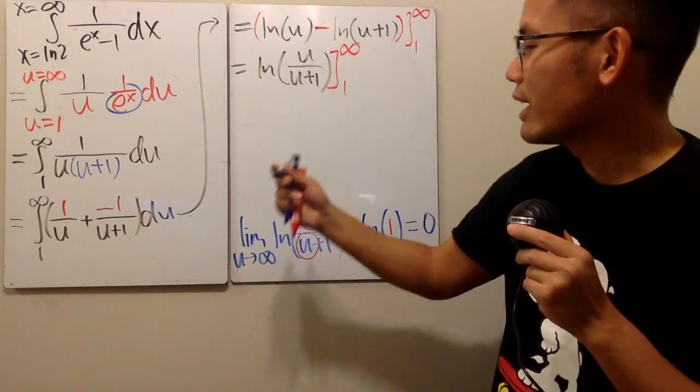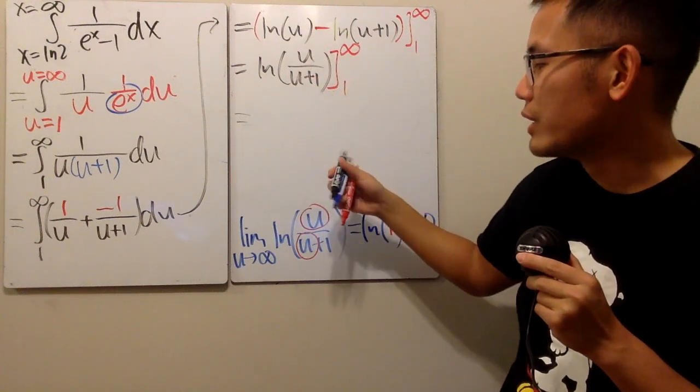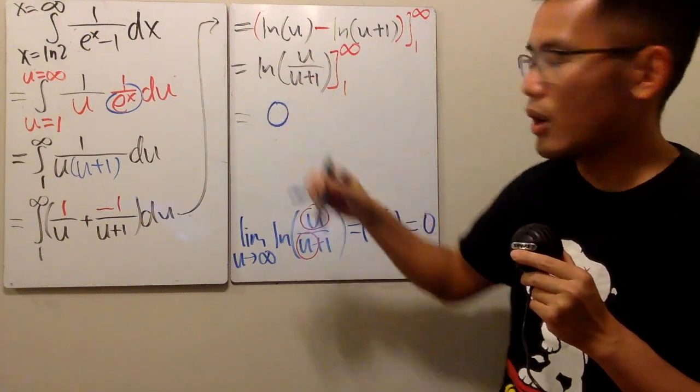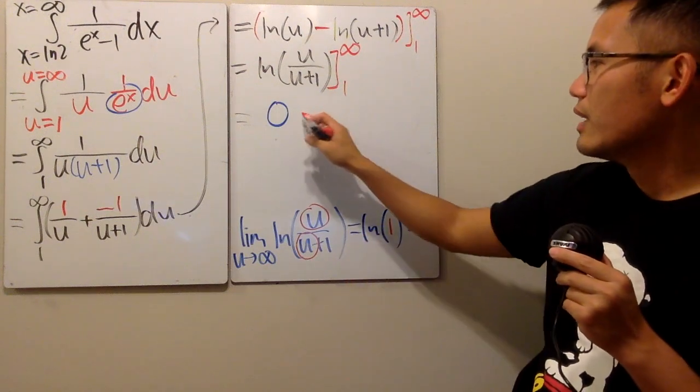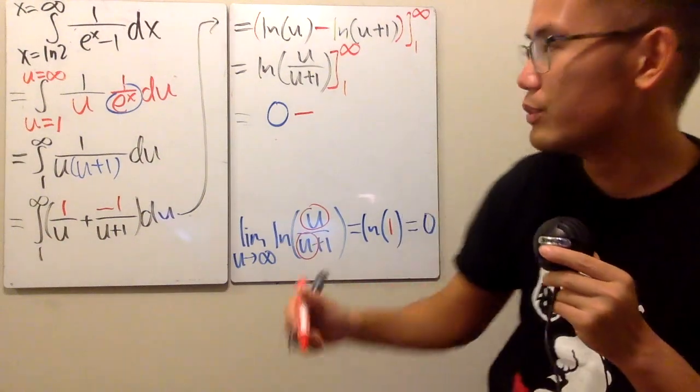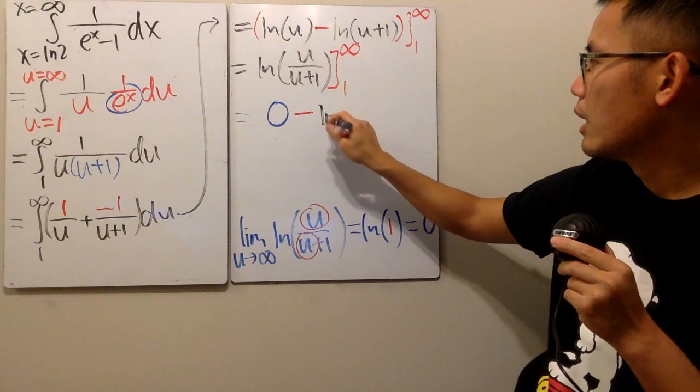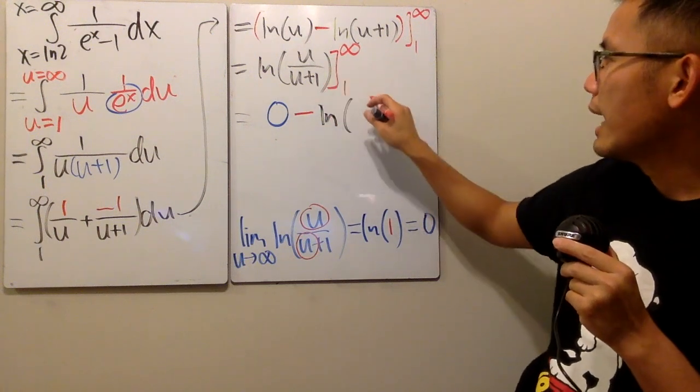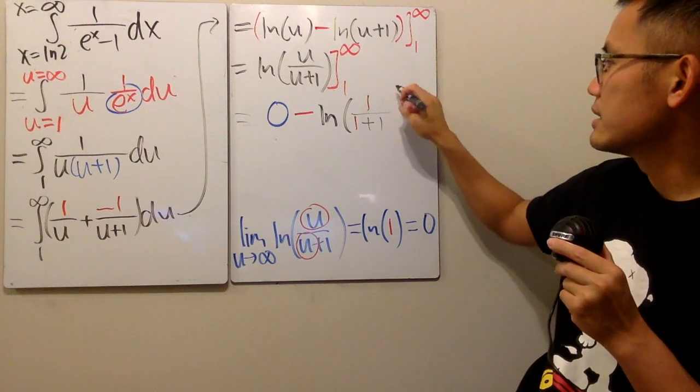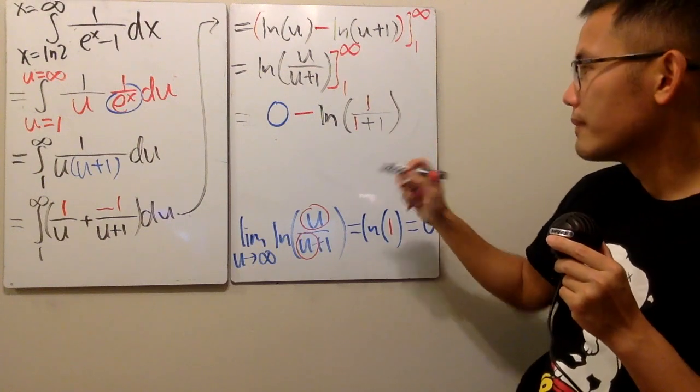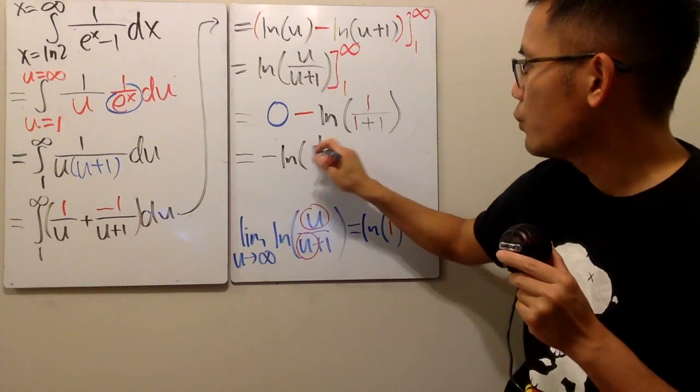So, we can come back here. When we have this infinity here, the first thing that we get is zero. Show the work right here. It's legit. Then, we are going to subtract. And then, we will just have to put the 1 into the ln. ln of 1 over 1 plus 1, like this. Finally, we'll see that this is just negative ln of 1 half.